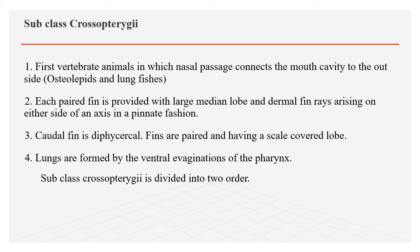Sarcopterygii are the first vertebrate animals in which nasal passages connect the mouth cavity to the outside through a pair of apertures — this is seen in Osteolipids and lung fishes. Each paired fin is provided with a large median lobe and dermal fin rays arising on either side of an axis in a pinnate fashion.